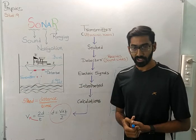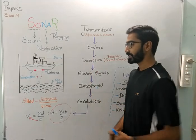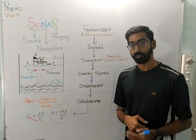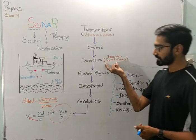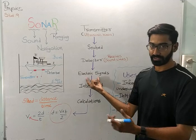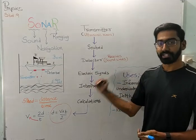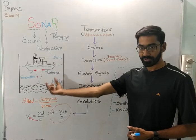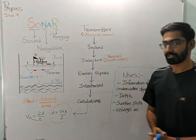Those reflected sound waves will be detected by another instrument called detector. Now detector has one more function. It will receive the sound wave and convert it into electrical signals. These electrical signals are further interpreted and the depth of this water body is then calculated.